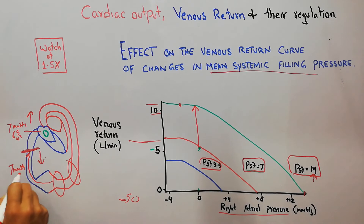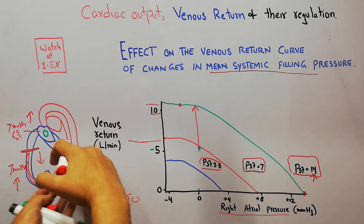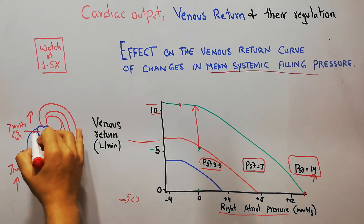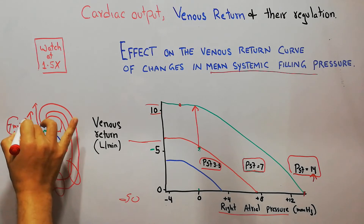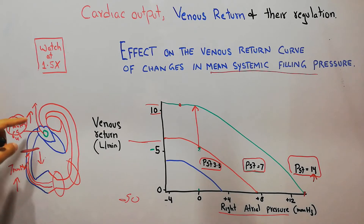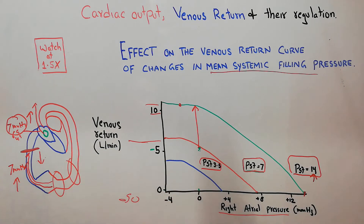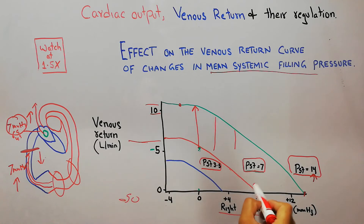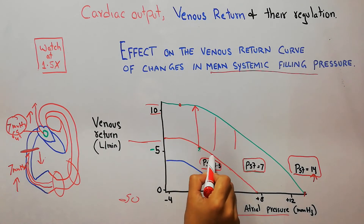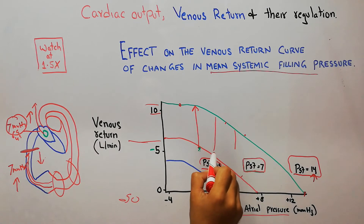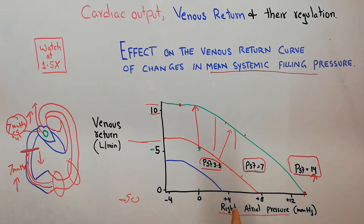Because the pressure with which the blood is moving toward the heart has been increased, blood is now coming with more force towards the heart. So the pressure at the right atrium will have to increase even more than 7 mmHg — only then will the venous return touch zero. This means that when mean systemic filling pressure is increased, the venous return at every level of right atrial pressure is higher than normal.